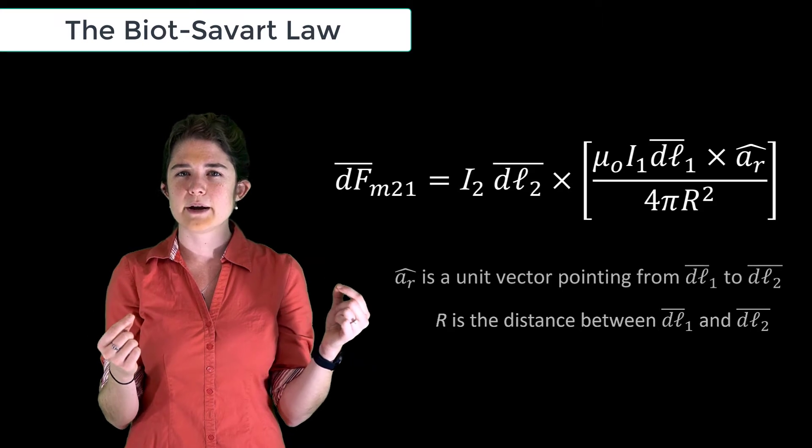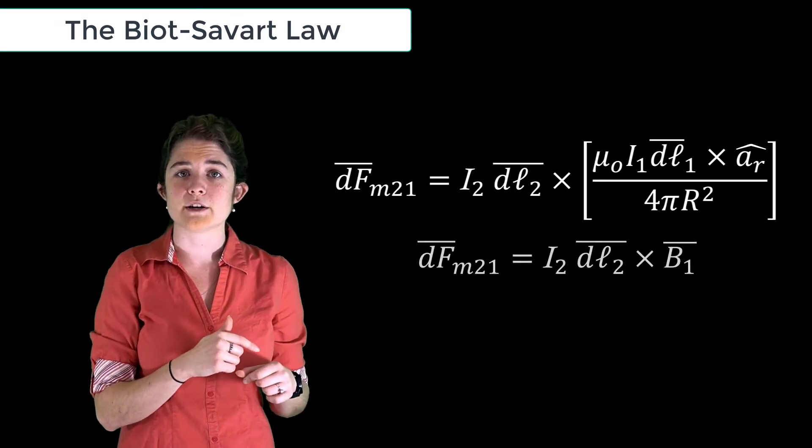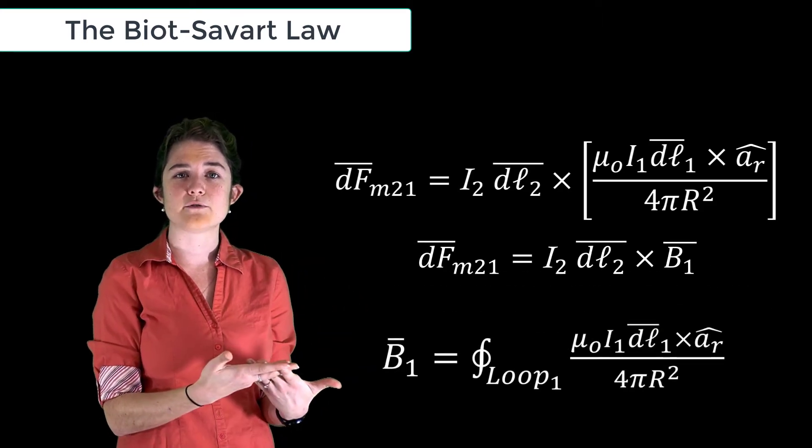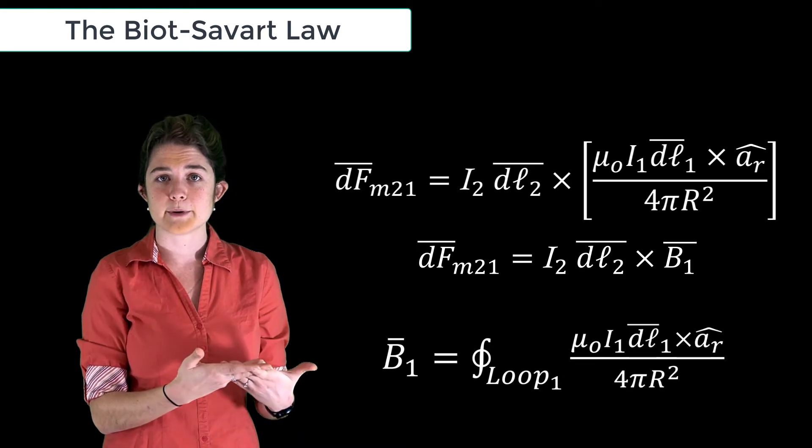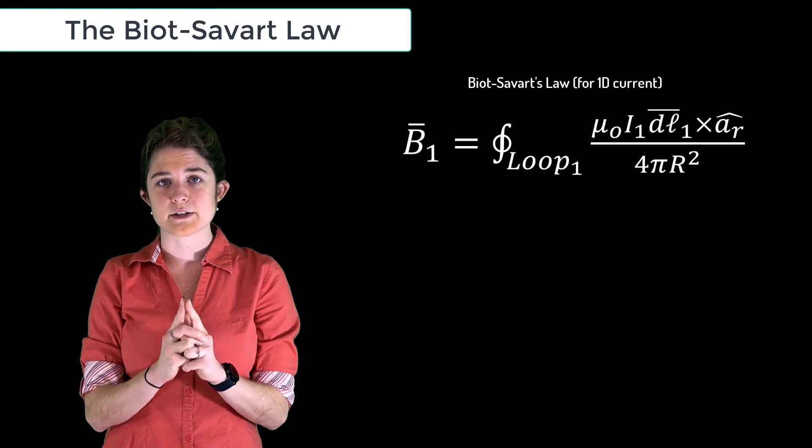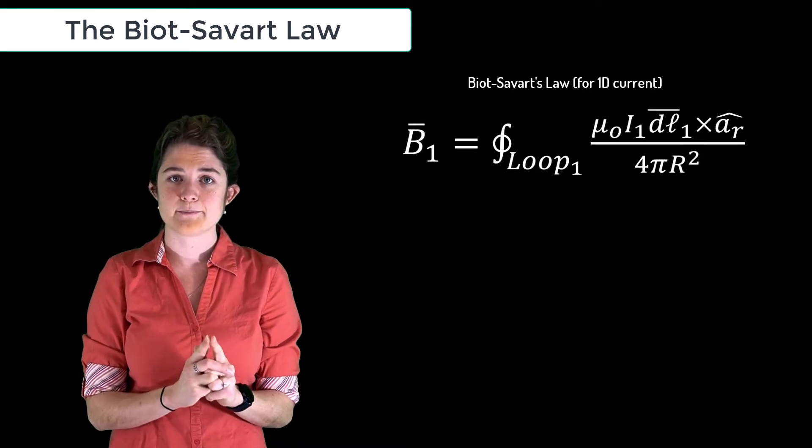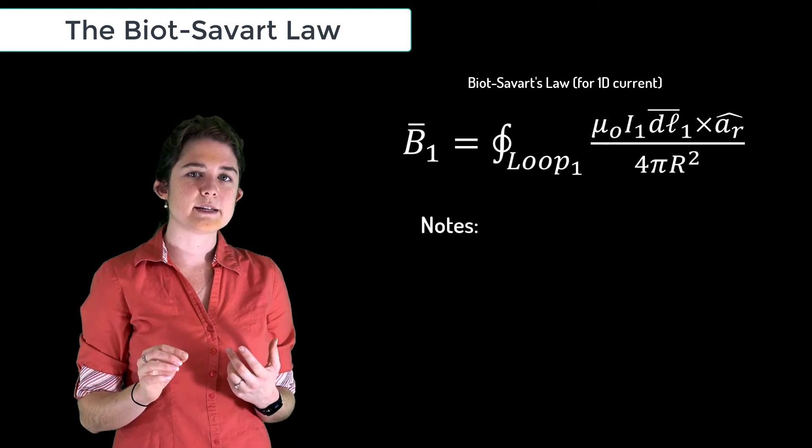By comparing this to our original force equation, we can pull out this expression for the magnetic field of the first loop. This is Biot-Savart's law for a one-dimensional current. Notice that this equation only depends on the properties of the first loop.